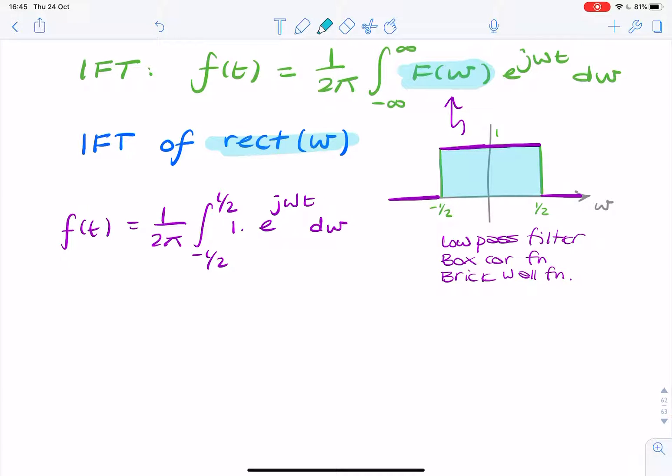Now remember, we're integrating over frequency omega, so the constant in this case will be time. So when dividing, I'll be dividing by jt, giving e to the jωt from minus 1/2 to 1/2.